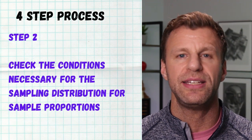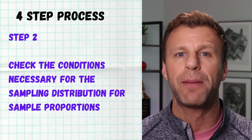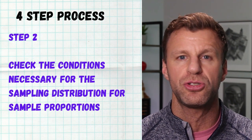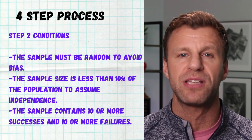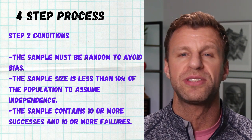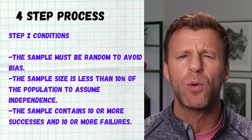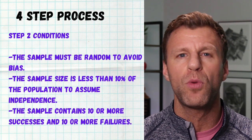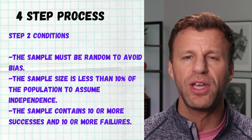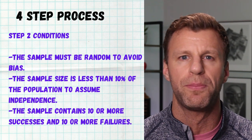Step two is checking the conditions. The three conditions for the sampling distribution to be usable are: first, the sample must be selected randomly to avoid bias; second, the sample size must be less than 10% of the population it was taken from; and third, the sample needs to be big enough — meaning 10 or more successes and 10 or more failures in the sample, so 10 or more yeses and 10 or more noes.